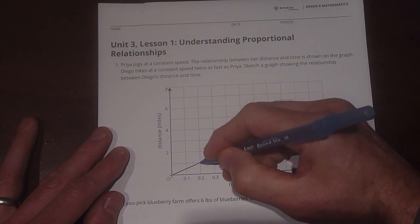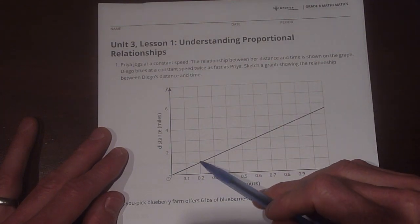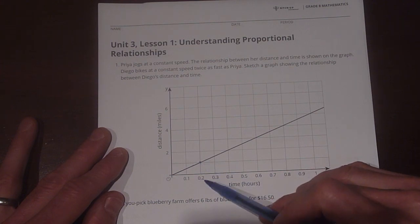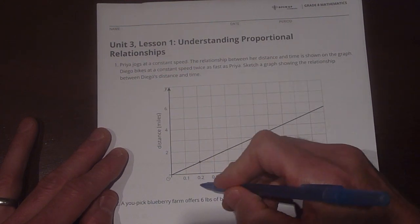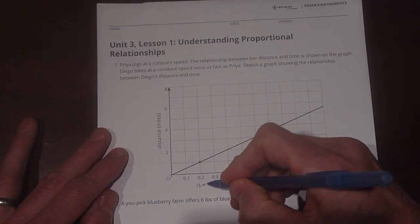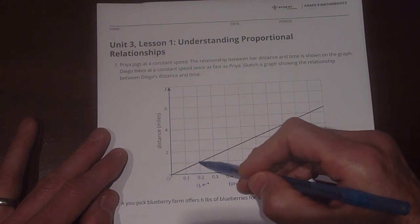So if we look here at this point, Priya's pace intersects with a line here on the graph, so it makes it easy for us. At .2 or 2 tenths of an hour, which is also 12 minutes, another way to think about it, Priya has run 1 mile, because it crosses right over there.